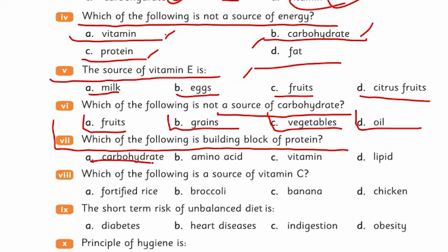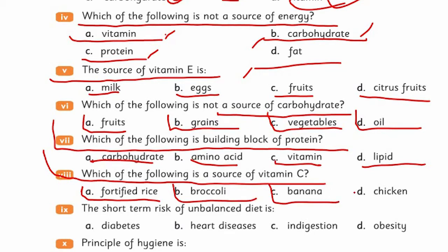Which of the following is the building block of protein? It's clearly written - not carbohydrate, amino acid can be thought of, not vitamin or lipid. It's clearly written what proteins are made of. Which of the following is not a source of vitamin C? Go straight to vitamin C and see which one doesn't give vitamin C.